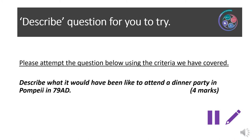Please see below a describe question for you to try. Attempt the question using the criteria we have covered. Remember, a describe question is worth four marks and can be made up of four valid points, or two valid points with development, or a valid point with development plus two more valid points. Any of these combinations are acceptable. Question: Describe what it would have been like to attend a dinner party in Pompeii in 79 AD. When completed, there is an exemplar answer on slide 12. You can refer back to slides 7 to 10 for support.